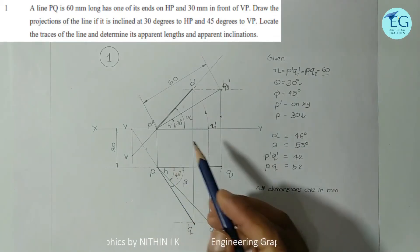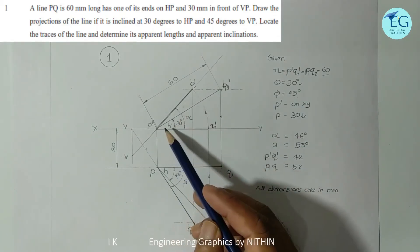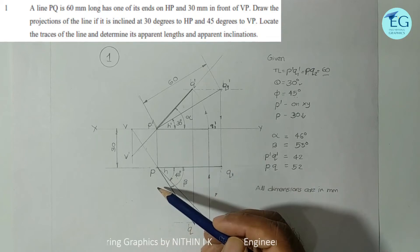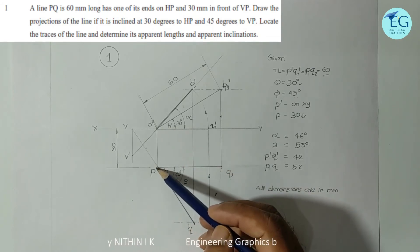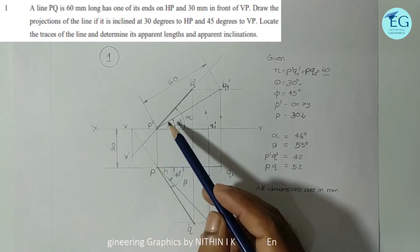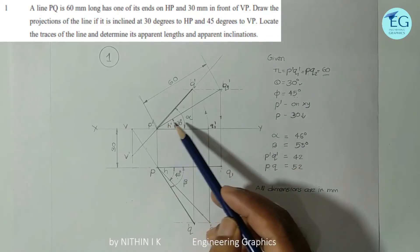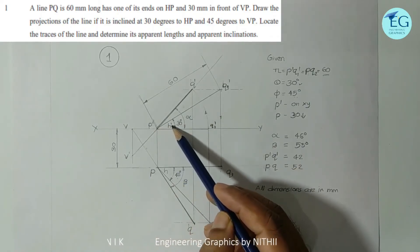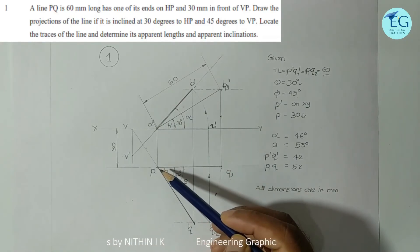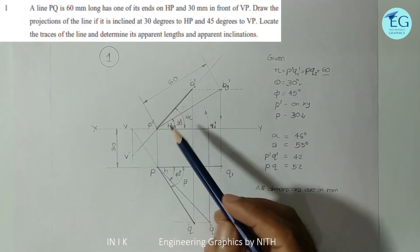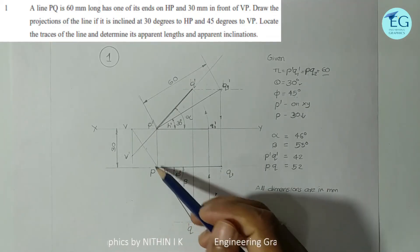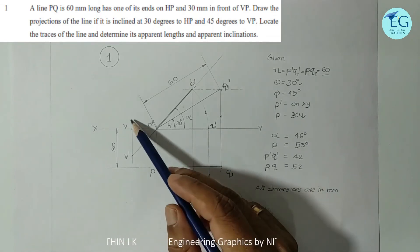Now we locate the traces of the line. The trace is the point where the line, extended, meets HP or VP. When the line is extended to meet HP, that point is H, the horizontal trace. Extending P'Q' in the front view to meet the XY line gives h', and then projecting h' down to the top view gives H, the horizontal trace. For the vertical trace, the top view PQ is extended to meet the XY line at point V, the vertical trace.